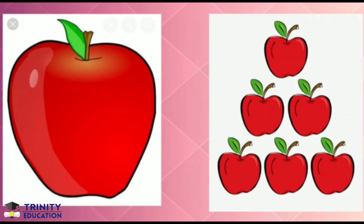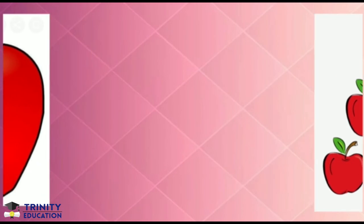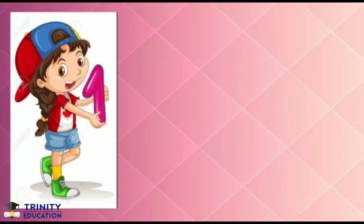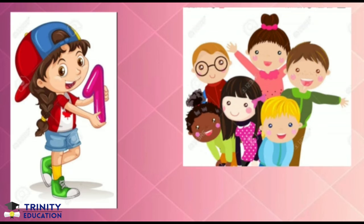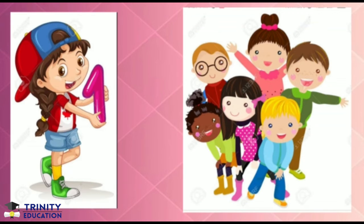So let us understand this concept with the help of some examples. Look at this picture. This is a picture of a girl. And how many girls do you see? You see only one girl. And see on the other picture, there are more than one girl. So there are many girls.